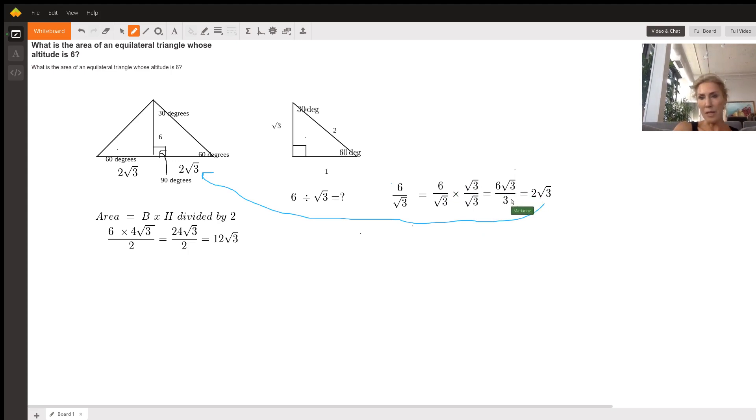Multiply across the top, I get six radical three. Multiply across the bottom - anything under a radical sign multiplied by itself is the number inside. So radical three times radical three is plain old three. Now I can simplify the whole number: six divided by three is two. So what have I just calculated? I've calculated half of this length is two radical three.